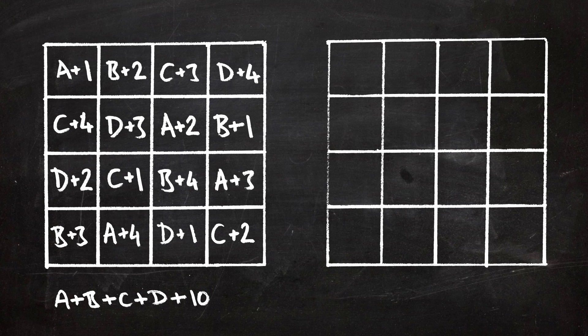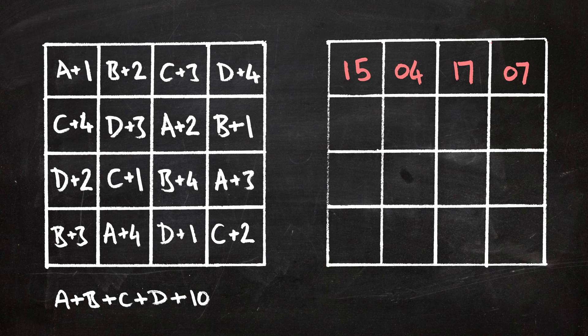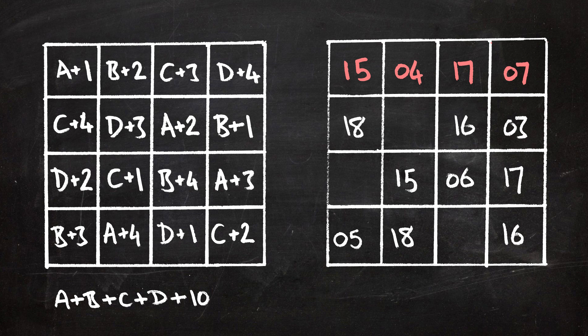Now, if you want to make a birthday magic square, start with a new grid and fill the top row with whatever numbers you want, then fill in the rest using the Euler square. Let's try that with Euler's date of birth. In the top row I put 15, 4, 17, 07. I fill in the A squares, then the B squares, then the C squares, and the D squares — and I have created a birthday magic square.